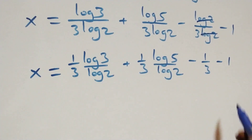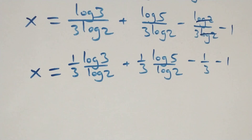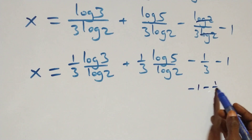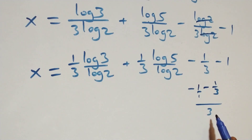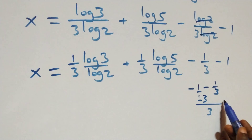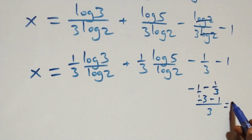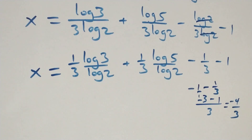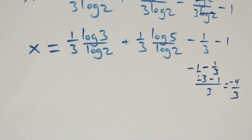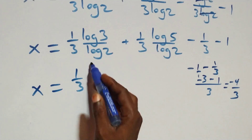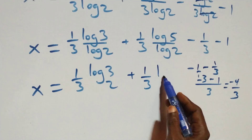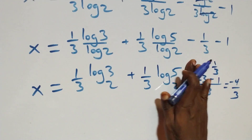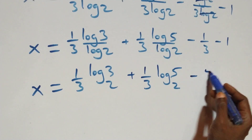Then we bring the constant terms together as one fraction. We have negative 1 minus 1 over 3. Writing 1 as 3 over 3, we get minus 3 over 3 minus 1 over 3, which gives minus 4 over 3. So the constant part becomes minus 4 over 3.